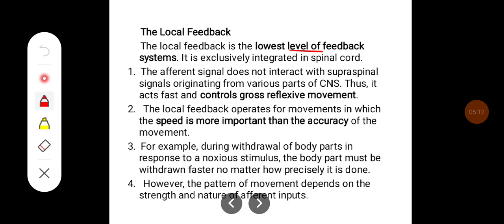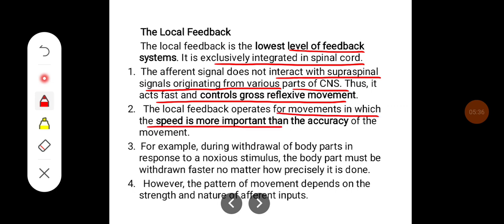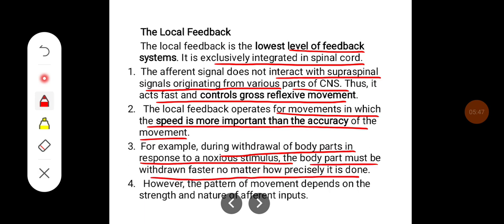The local feedback is the lowest level of the feedback system. It is exclusively integrated in the spinal cord, and the afferent signals do not interact with supraspinal signals. Thus it acts fast and controls gross reflexive movement. The local feedback operates for movements in which speed is more important than accuracy — for example, during withdrawal of body parts in response to noxious stimuli, the body part must be withdrawn rapidly, regardless of precision. The pattern of movement depends on the strength and nature of the afferent inputs.